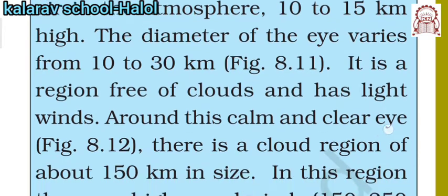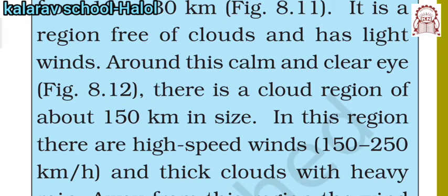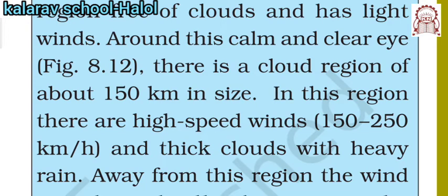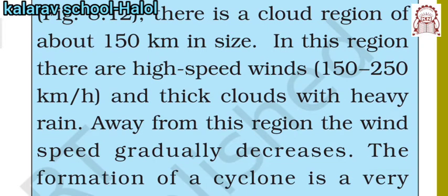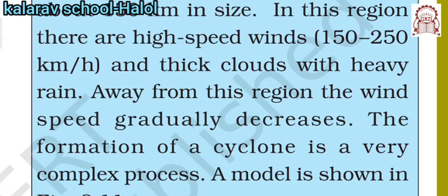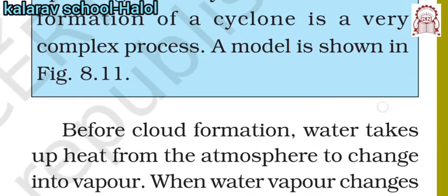In the cyclone region, the speed of the wind is very high and it causes heavy rain. Away from the region, the wind speed is very less, but within the region of the cyclone, the speed of the wind is very high.